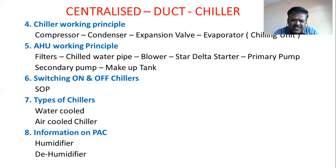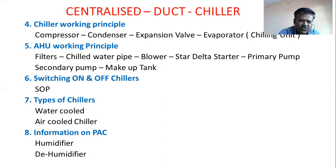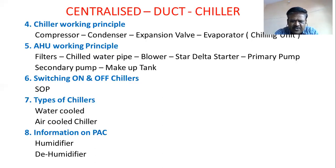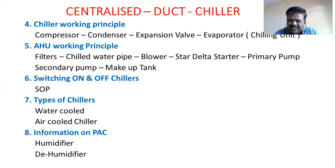Without switching on the primary and secondary pumps first, do not try to switch on the chiller directly — if you try, it trips immediately. When you switch on the primary and secondary pumps, they circulate the stagnated water which is filled inside the pipes from chiller to AHU and from AHU to chiller — this is very much required. Once water starts circulating, then switch on the AHU, set the temperature, and proceed.